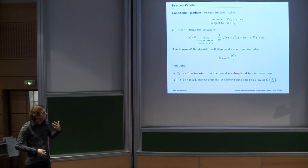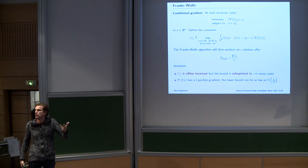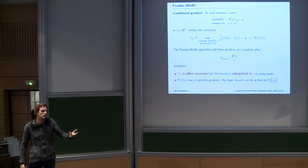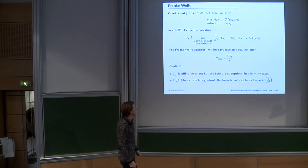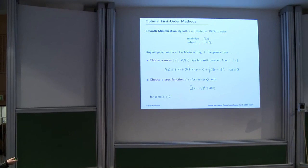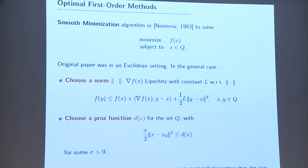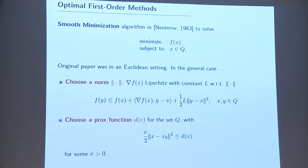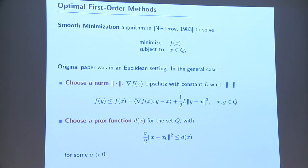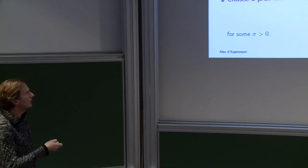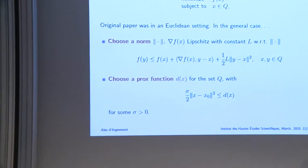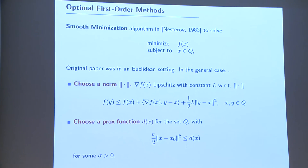At least we know it's possible for a first-order method to have an affine invariant bound. It's not the fact that we're losing second-order information that makes it impossible to produce invariant bounds — it's really about algorithm design and the way we bound the complexity of the method. The classical method that reaches lower complexity bounds for smooth optimization is the Nesterov method of 1983. The original paper was in a Euclidean setting, but in the general case the algorithm requires you to make a certain number of choices.